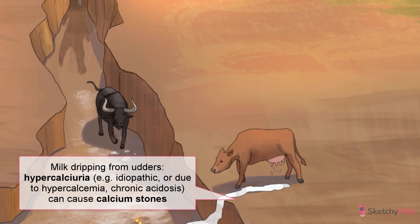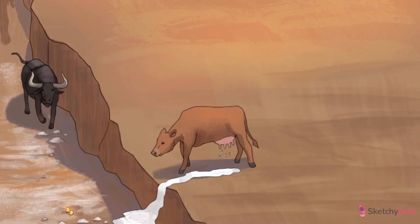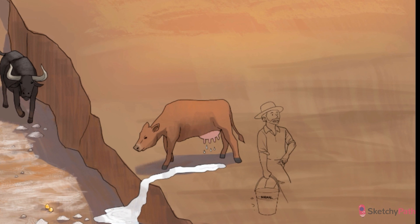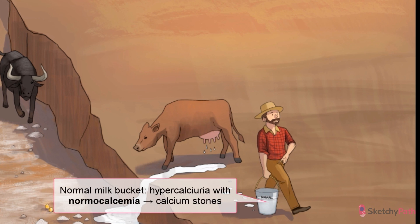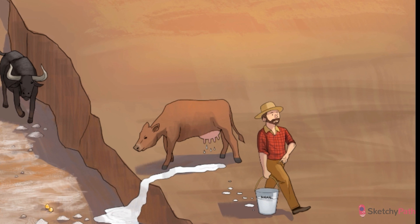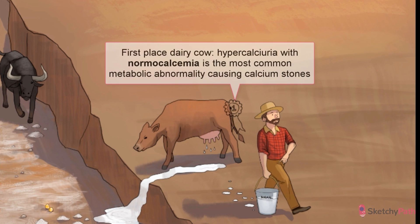They secrete an abnormally high amount of calcium into the renal tubule. So where is all this calcium coming from? It's easy to imagine that if a patient is hypercalcemic — that is, they have too much calcium in their blood — then they'll have to excrete more calcium and oversaturate the tubule. But here's the weird thing: most patients have completely normal serum calcium levels. See this guy here, taking a break from repeatedly dipping a pan in water looking for shiny things? His milk bucket is filled right to the normal line, representing normal calcemia. This is called hypercalciuria with normal calcemia, and it's the most common metabolic abnormality underlying calcium stone formation.